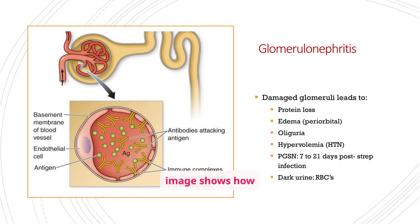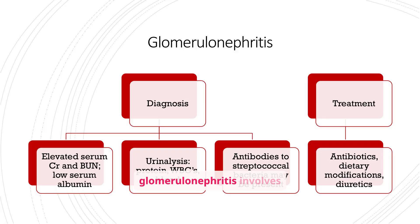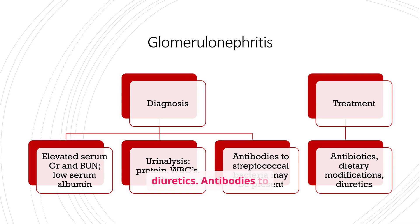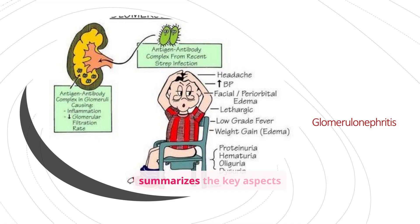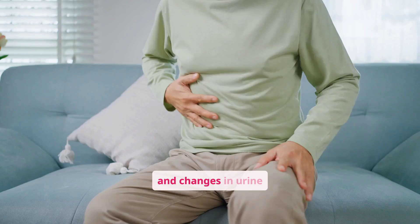The image shows how antibodies attack antigens and immune complexes deposit in the glomeruli. Diagnosing glomerulonephritis involves assessing serum creatinine and BUN levels, as well as performing a urinalysis to check for protein, WBCs, and blood. Treatment typically includes antibiotics, dietary modifications, and diuretics. Antibodies to streptococcal bacteria may also be present. This illustration summarizes the key aspects of glomerulonephritis, showing the antigen-antibody complex in the glomeruli leading to inflammation and decreased GFR. Patients may experience symptoms such as headache, edema, lethargy, and changes in urine output.